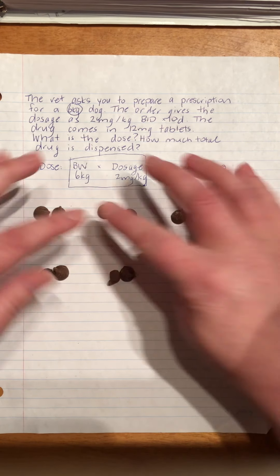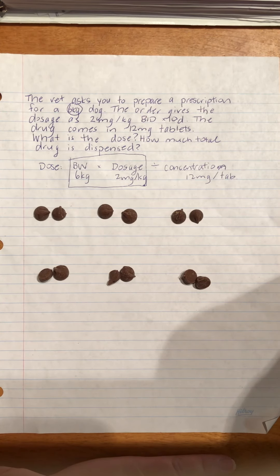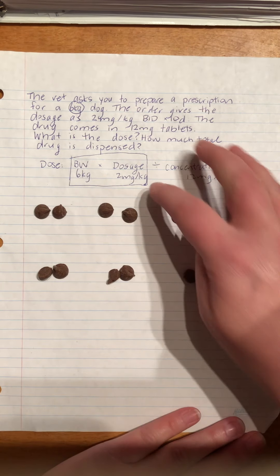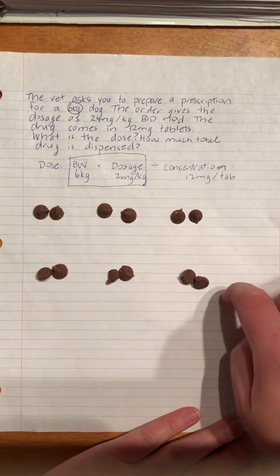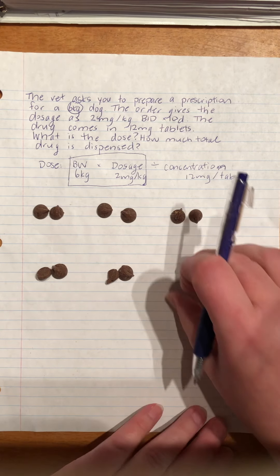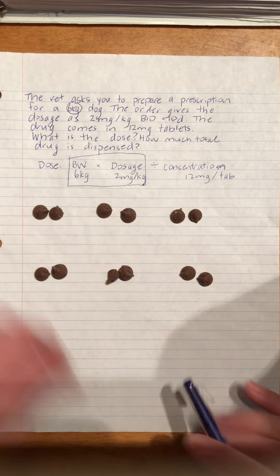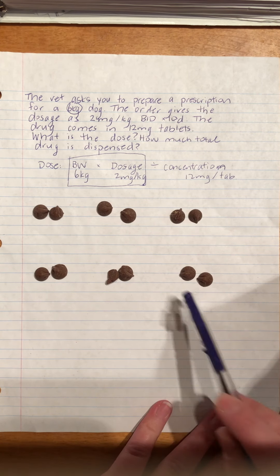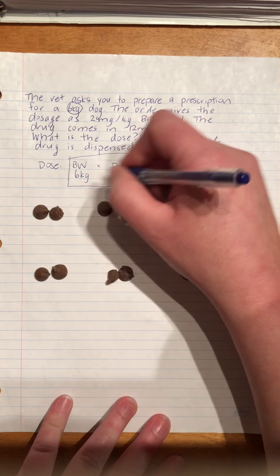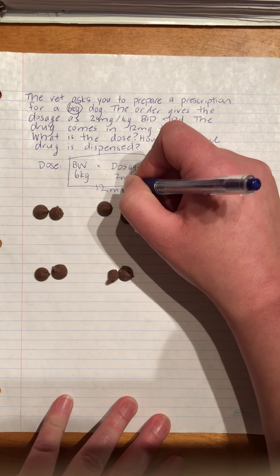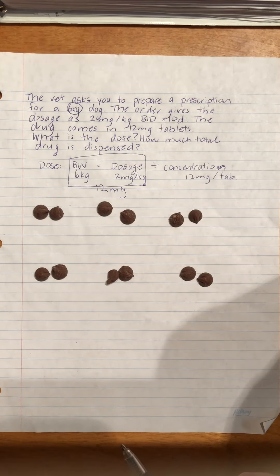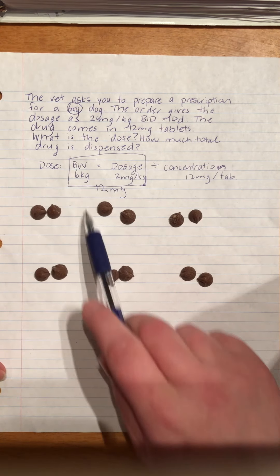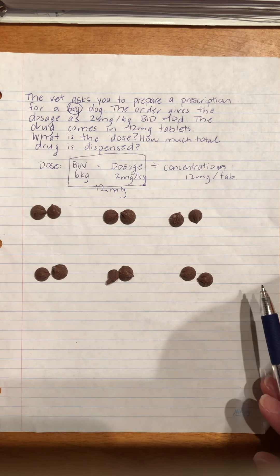I have six groups of two — one section for each kilo with two milligrams for each kilo. If I add them all up, I can just count: one, two, three, four, five, six, seven, eight, nine, ten, eleven, twelve. So the answer to this section is 12 milligrams.